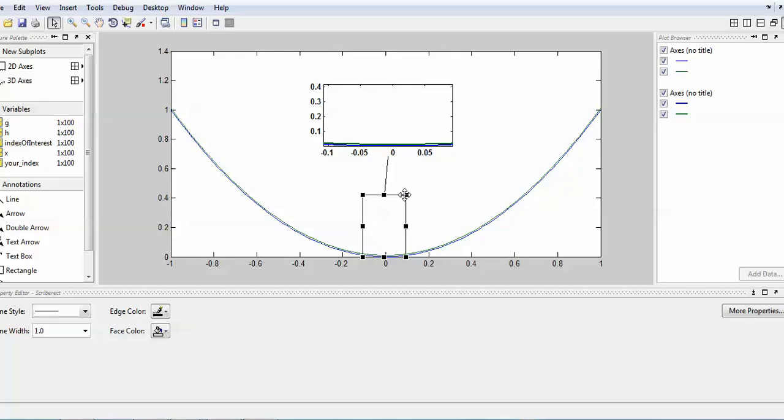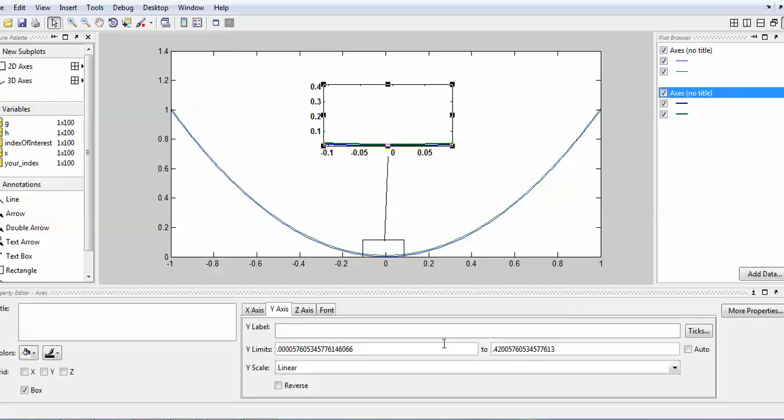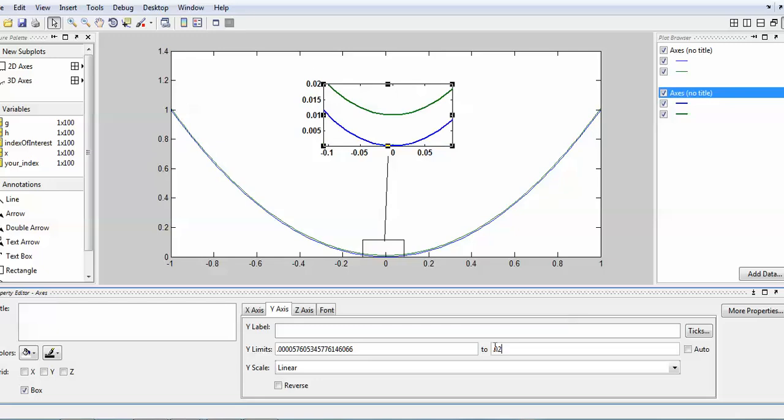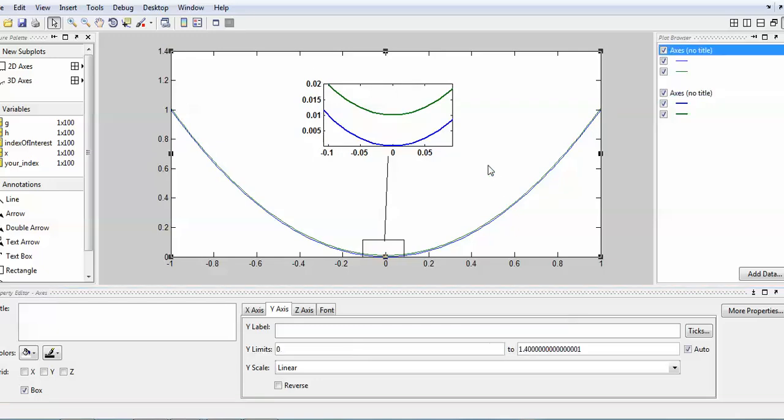You just manually change the position where you wish and you can increase this and accordingly you can change the value of this. This is actually 0.2 something I think yes.